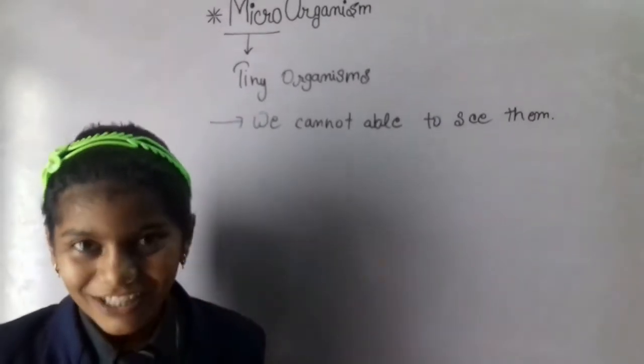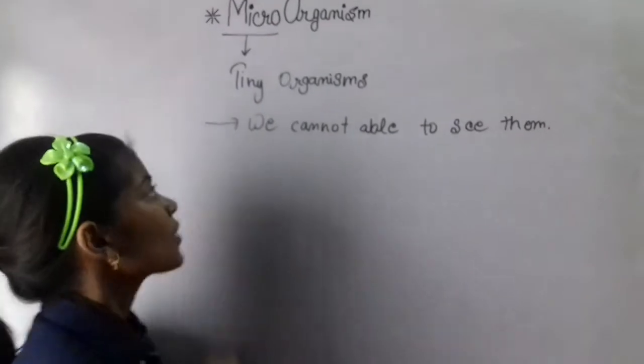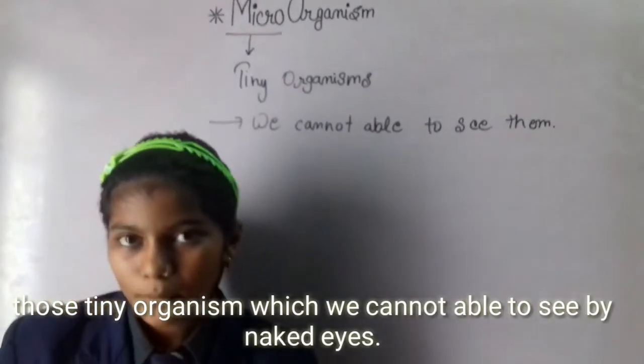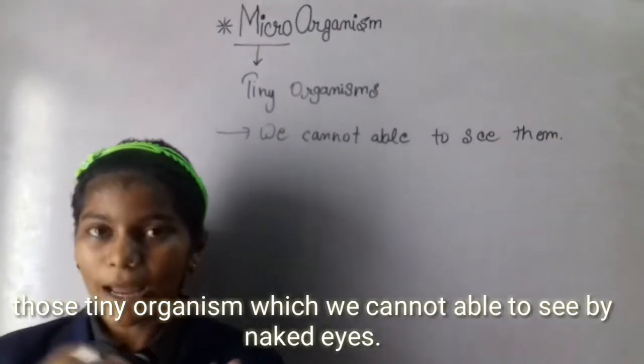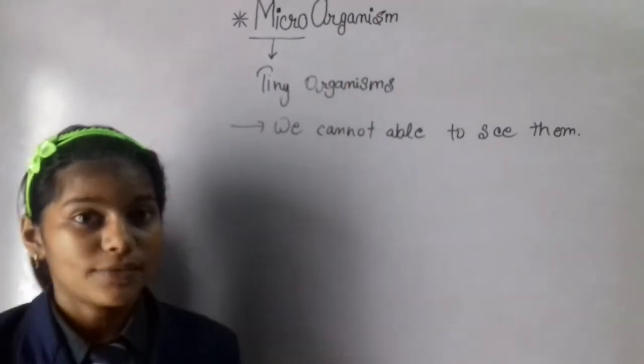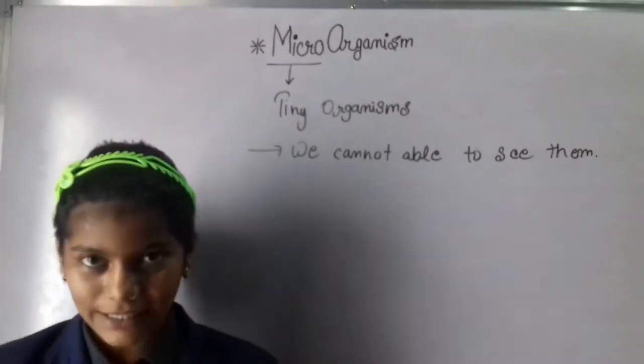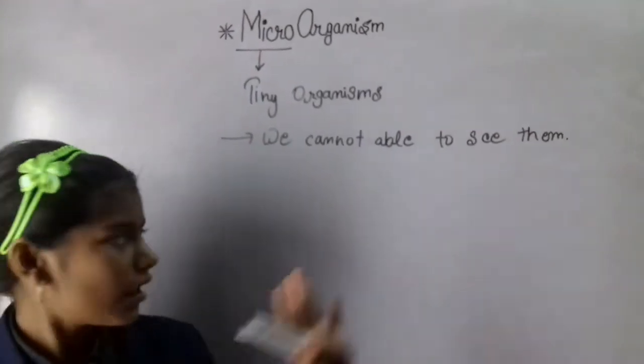Because they are very tiny microorganisms, the definition is: those tiny organisms which we cannot see by naked eyes are known as microorganisms. So can we see them? Yes, we can see them, but not with our eyes.